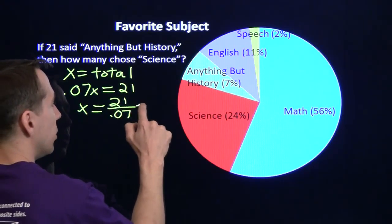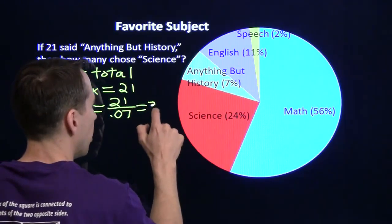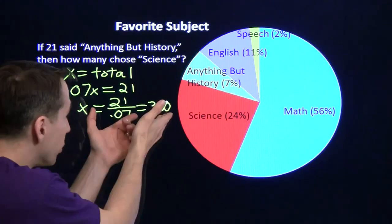Divide both sides by .07. 21 over .07. You divide 7 into 21, you get 3. Well, you got the decimal place to deal with, it'll come out to be 300.